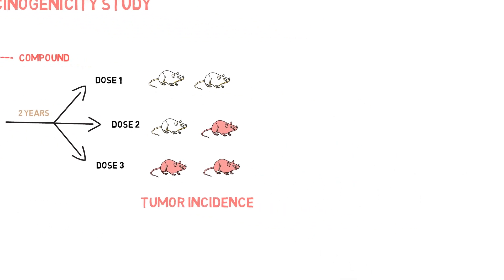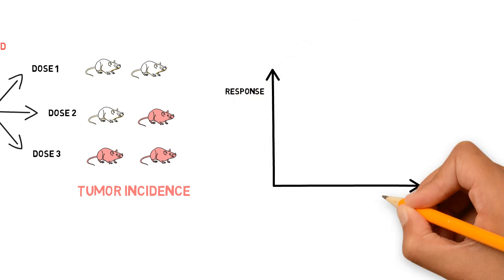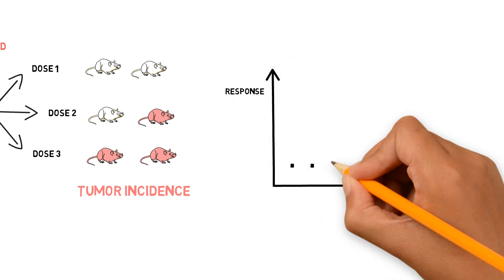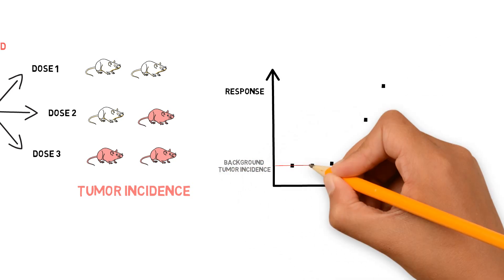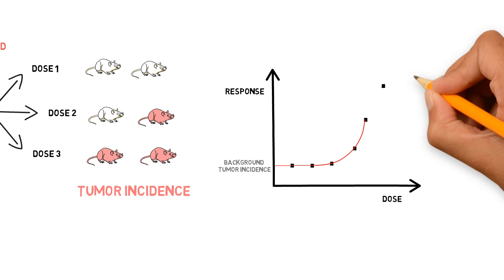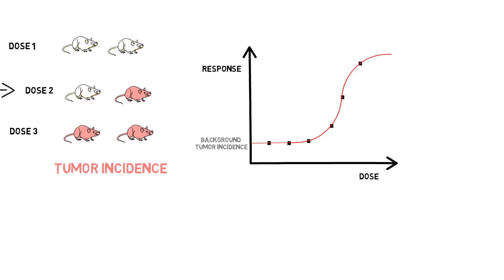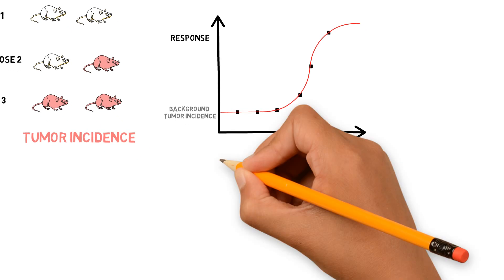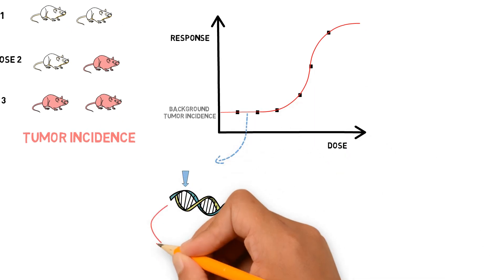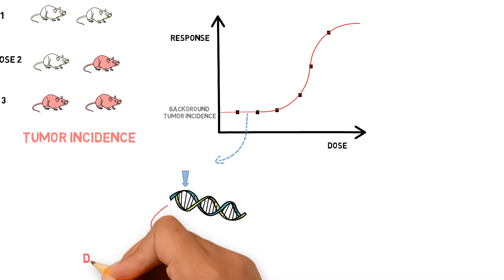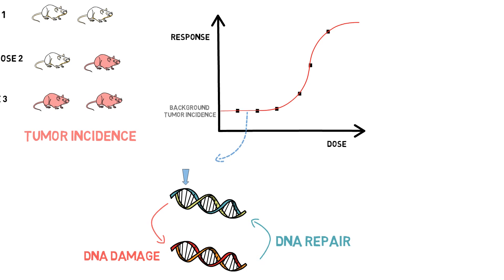When we plot the results in a graph, we may see a dose-response curve where at low doses we just see the background incidence of tumors, and then above a certain exposure we start to see an increase in tumor incidence. The explanation for this is that at very low levels of exposure, there are DNA repair mechanisms preventing DNA damage from becoming a mutation, and other mechanisms which avoid tumors from developing.